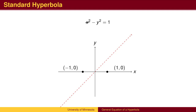For example, if x equals 10, then x squared equals 100, so y squared equals 99, and y is the square root of 99, which is just slightly less than 10. The further we go to the right, the closer the y value is to the x value.